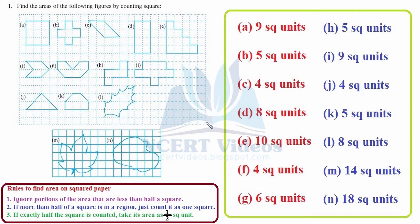Rule 1: ignore portions of the area that are less than half a square. For instance, this portion is less bounded, so we can ignore it because it is less than half. Similarly, we can ignore this one as well.